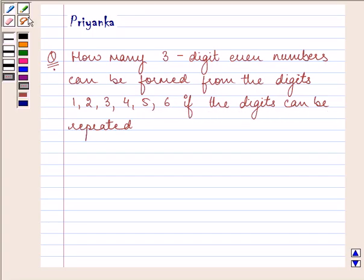So here what we need to take care of, first of all we need to make a three-digit even number and the digits can be repeated. So here we will be using the fundamental principle of counting or multiplication principle in order to find out our answer.